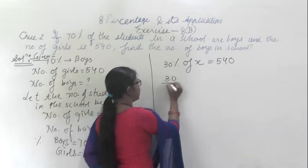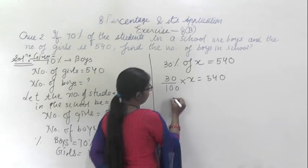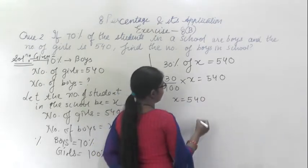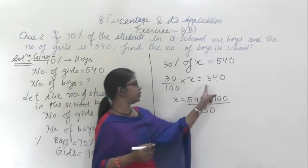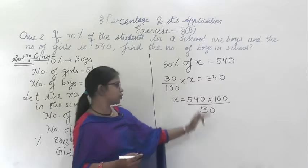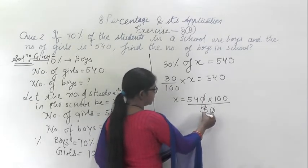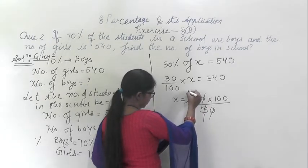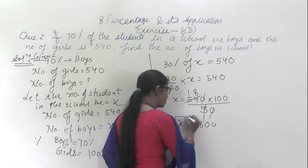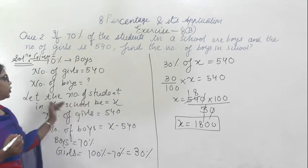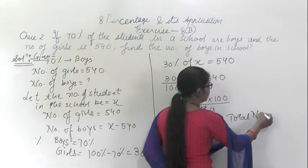From here: 30 divided by 100 times X equals 540, so X equals 540 into 100 divided by 30. By cross multiplication, the zeros cancel, and we get X equals 1800. So X, which is the total number of students in the school, is 1800.